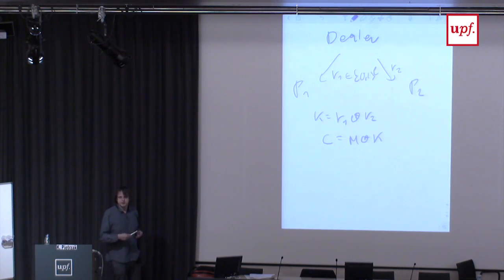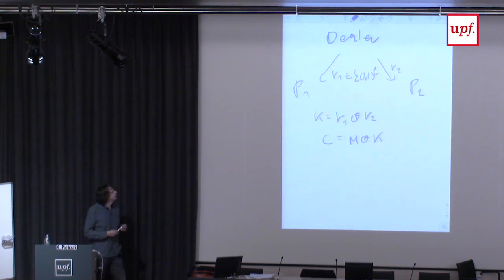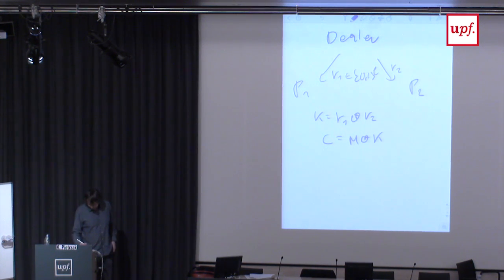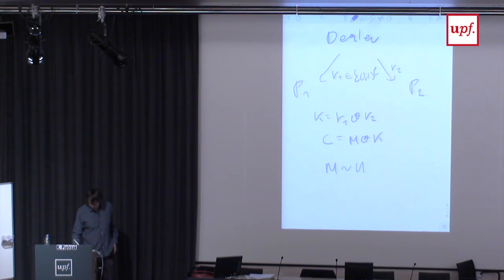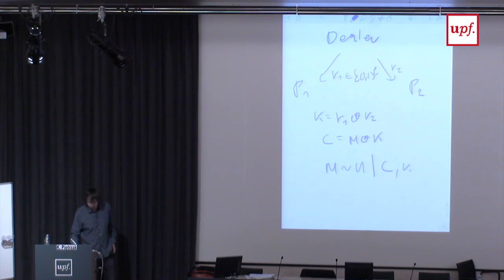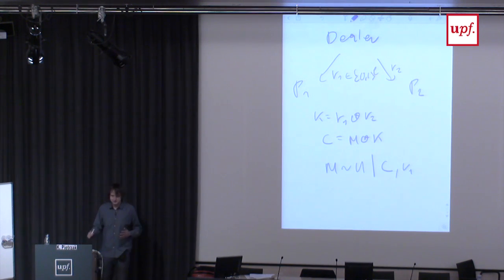This is something you probably learned in an introduction to crypto course — something Shannon already showed. If you have R1, what one has to show information-theoretically is that M is uniformly distributed, or there is no information about the message M, given the ciphertext C and either R1 or R2. That's a very simple two-out-of-two secret sharing.